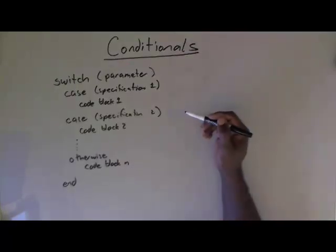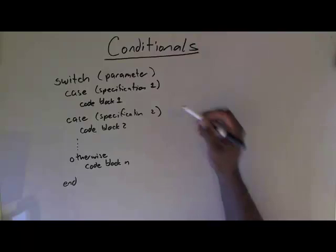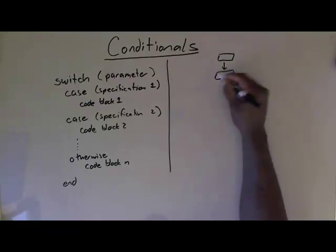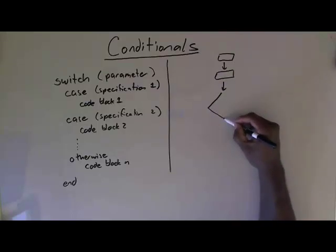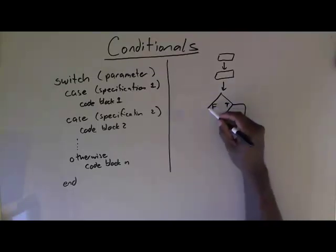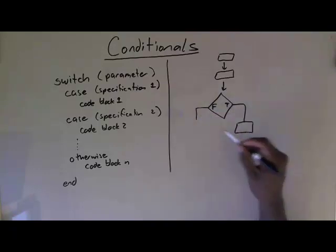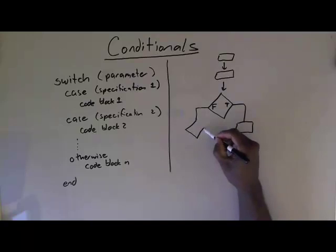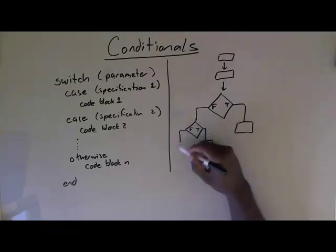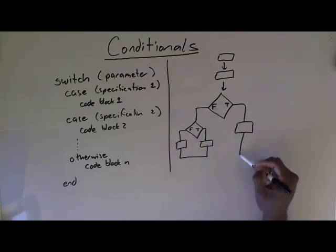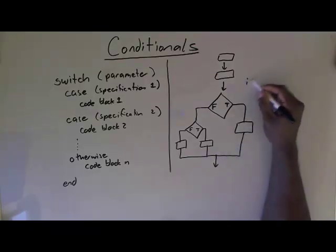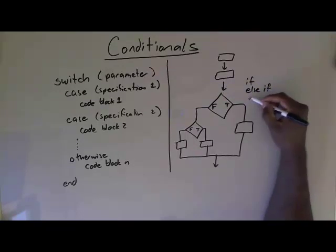Looking at it as a block diagram: recall the if statement — you come in, you have code blocks, then a decision diamond. If true, you do one thing; if false, you come here and do another. With else-if, you can chain another condition. On the else part, you do one more. This is a general if, else-if, else construction.